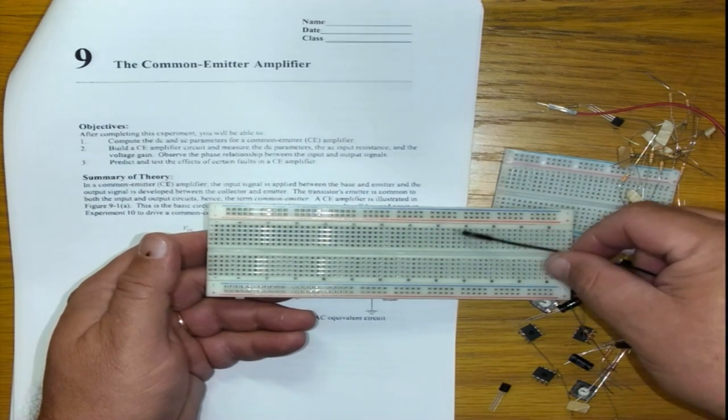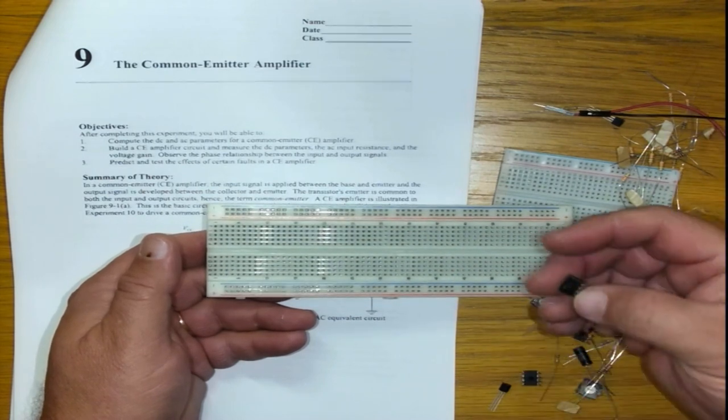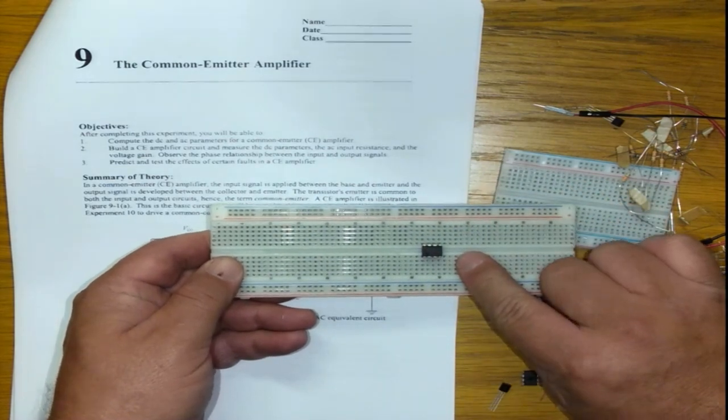The holes in the middle are five holes up and down. So keep in mind that when we use an integrated circuit, an IC or so, that's typically how we will place it.